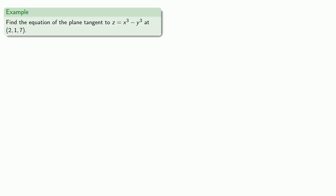So for example, let's find the equation of the plane tangent to z = x³ - y³ at the point (2, 1, 7). So we'll find our partial derivatives, and at the point (2, 1, 7), those values will be...